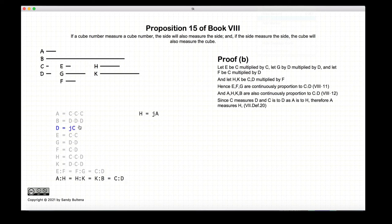And now because c measures d, we have c measuring d, and a to h equals c to d, then the same way that c measures d, a will measure h. And this is according to definition 20 of book 7, it's about ratios.